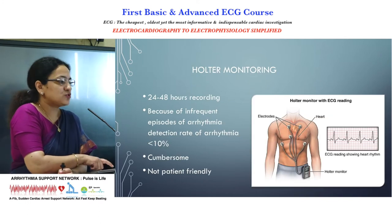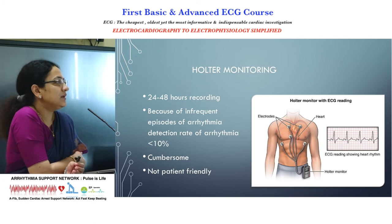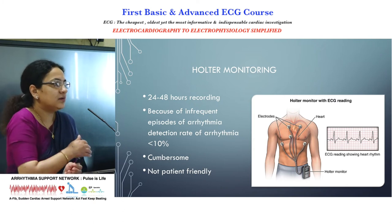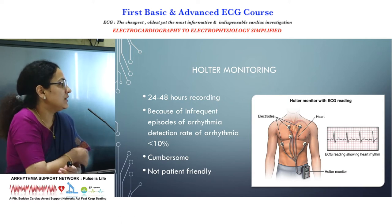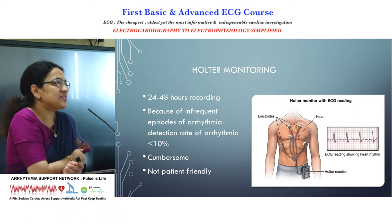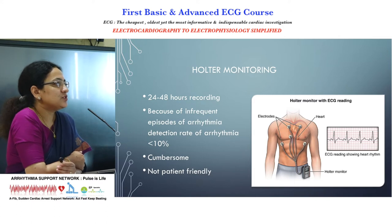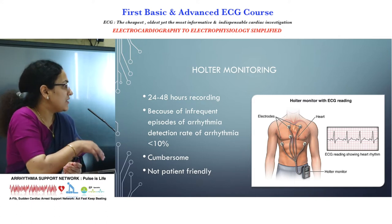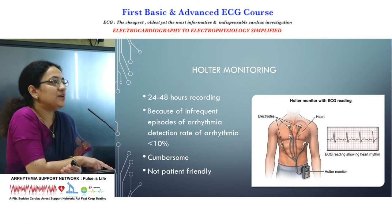Since arrhythmias are paroxysmal in nature, various modalities exist to monitor the ECG for a prolonged period. The oldest one is Holter monitoring, where ECG electrodes are placed on the patient for a recording lasting maximum 24 to 48 hours. The patient has to wear the electrodes, and the detection rate of arrhythmias is less than 10%. It is cumbersome and not patient friendly.